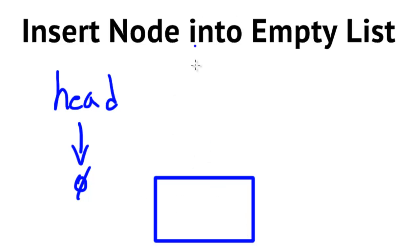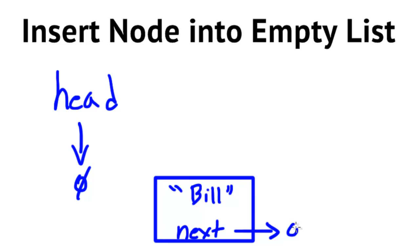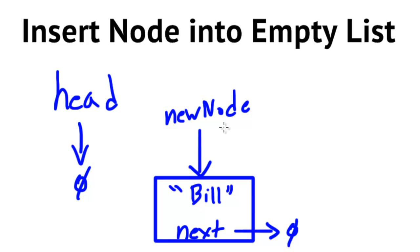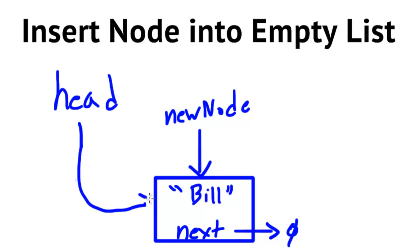We'd have some new node we're trying to add in — I'll draw a box for our new node. Maybe it has a string representing a name, say Bill, and a next pointer. We know that next pointer is always initialized to null. We'd also have a pointer that points to this new node, which we'll call our new node pointer.